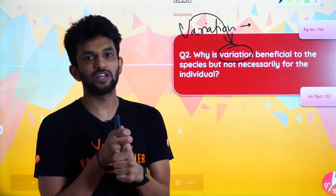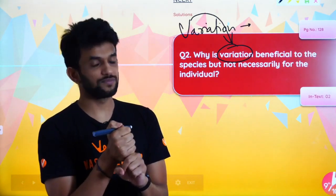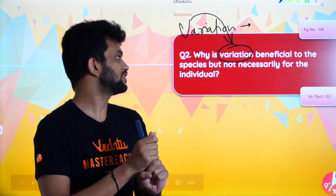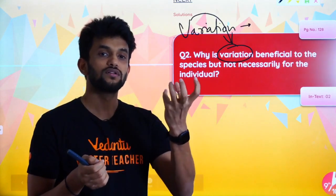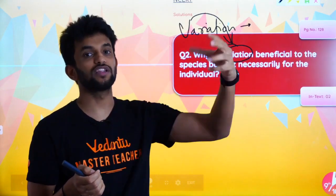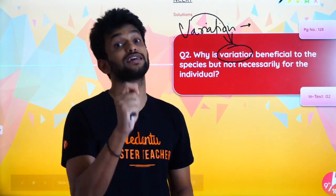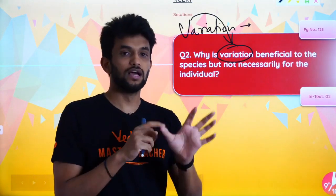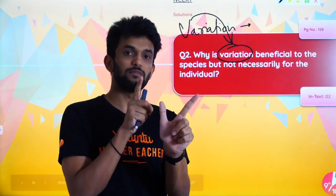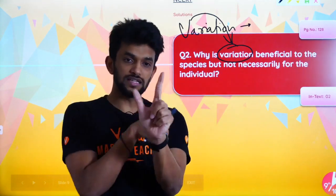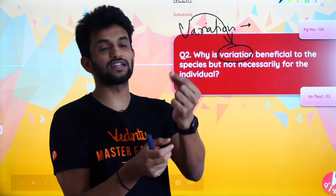In your answer you will explain: first, variation means difference amongst individuals of the same species. Second, why variation happens — because of sexual reproduction mainly. Third, why it is beneficial for the species — because it leads to passing of better characters to the next generation. Whereas for an individual the variation can be beneficial as well as detrimental. Write an example: a beetle can have variation of green and red color. This variation is good for the green beetle but bad for the red beetle, but overall this variation is good for the evolution of the species.